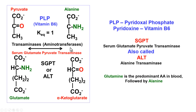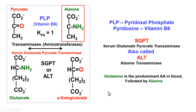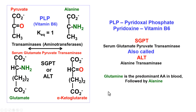The first step in handling ammonia is a transaminase reaction. There are many transaminase or aminotransferase enzymes. An example is serum glutamate pyruvate transaminase, designated SGPT — also called ALT or alanine transaminase — which uses the coenzyme pyridoxal phosphate, abbreviated PLP. Pyridoxal phosphate is made from the vitamin pyridoxine, or vitamin B6. In this reaction, an amino group is transferred from glutamate to pyruvate to make alanine, and the carbon skeleton of glutamate is converted into alpha-ketoglutarate, a TCA cycle intermediate.